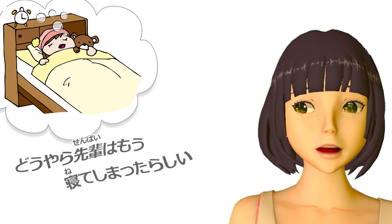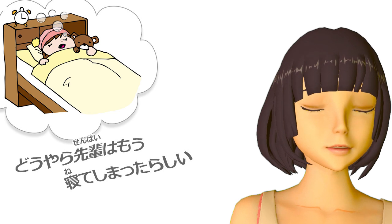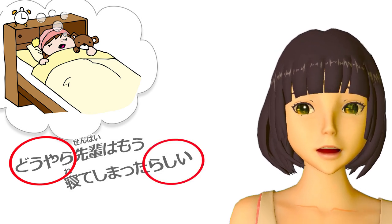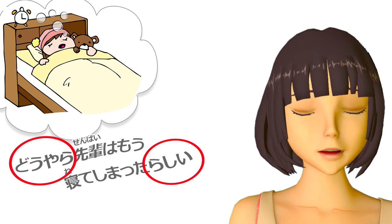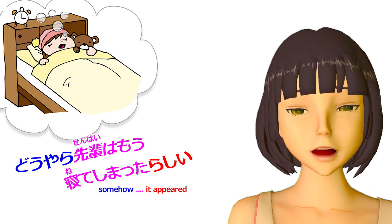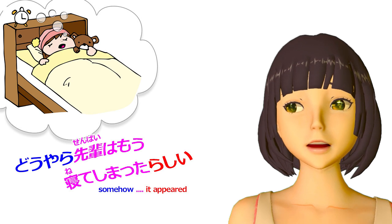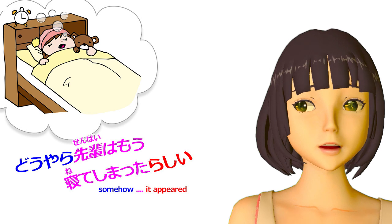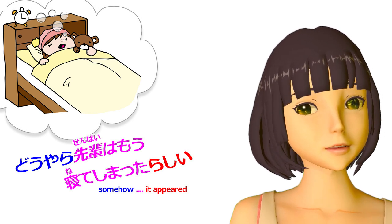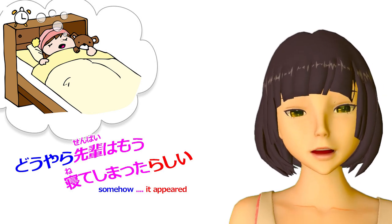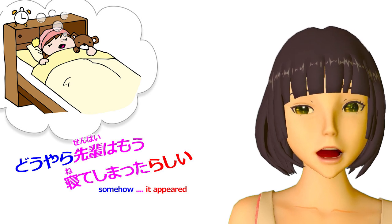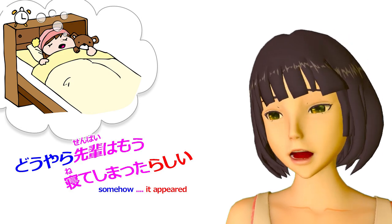Dou yara senpai-wa mou nette shimatta rashii. Dou yara in this case means 'it seems, it appears to be the case,' and this is working in tandem with the rashii at the end, which also means 'seems like, appears to be.' In between this sandwich that gives us the 'it appears to be the case' meaning, it says senpai-wa mou nette shimatta — Senpai has already done gone to sleep. Shimatta gives that 'done' meaning. She's already done gone to bed, it seems.